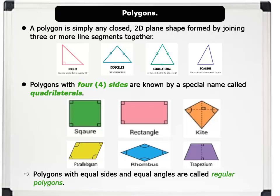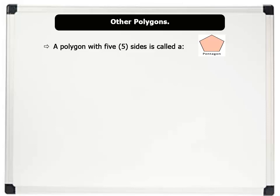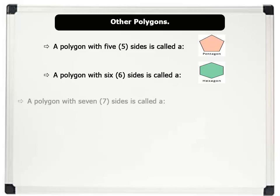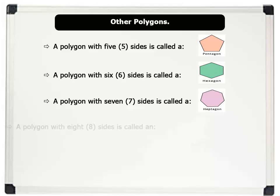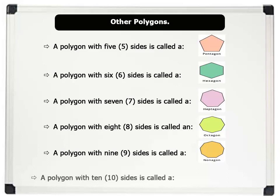Now let us see other types of polygons with different numbers of sides. A polygon with five sides is called a pentagon. A polygon with six sides is called a hexagon. A polygon with seven sides is called a heptagon. A polygon with eight sides is called an octagon. A polygon with nine sides is called an octagon. And a polygon with ten sides is called a decagon.